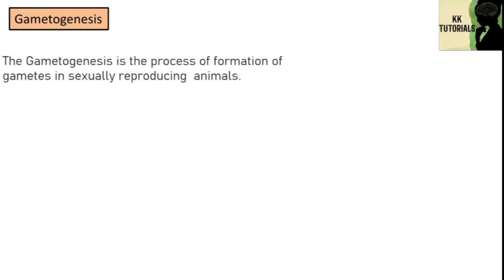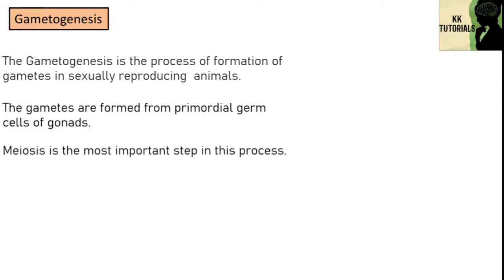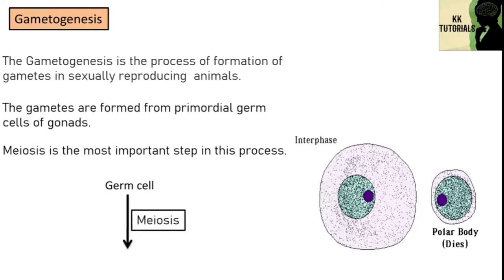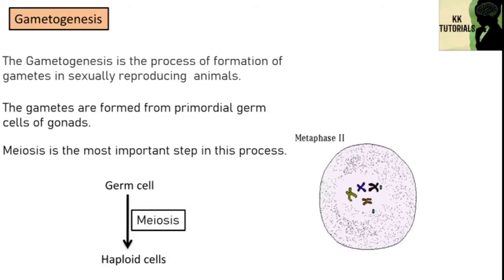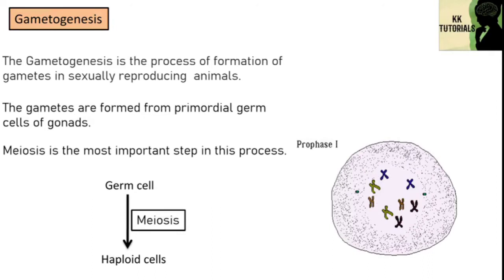Gametogenesis is the process of formation, that is production of gametes in sexually reproducing animals. The male gamete is sperm and the female gamete is ovum or egg. The gametes are formed from primordial germ cells of gonads. Meiosis is the most important stage because the germ cell undergoes meiosis and produces haploid cells that directly develop into gametes. I will take another separate video related to the meiosis process.